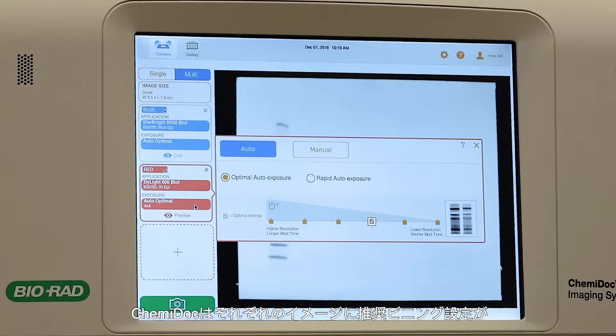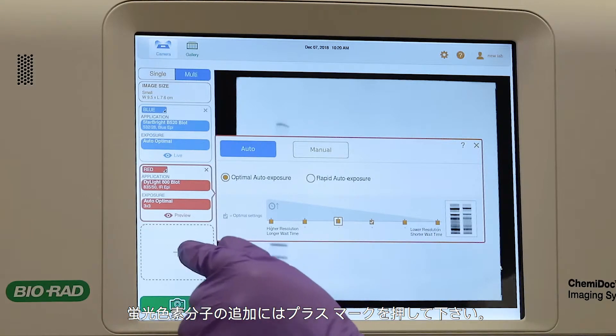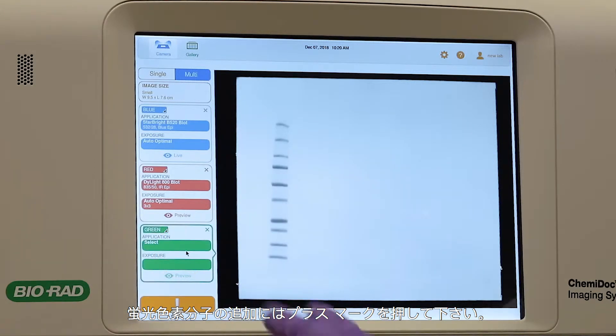The KemiDoc will provide a recommended binning setting for each image, but user control is enabled to adjust from 1x1 to 8x8 binning. Tap the plus sign to add additional fluorophores.